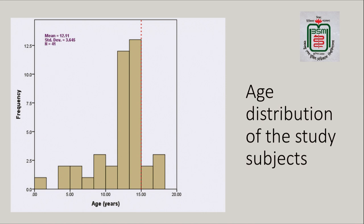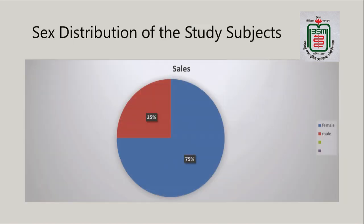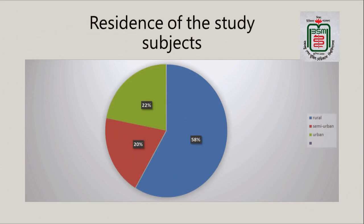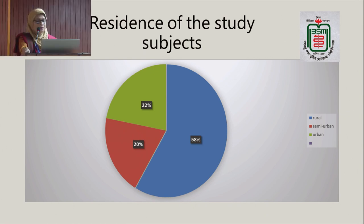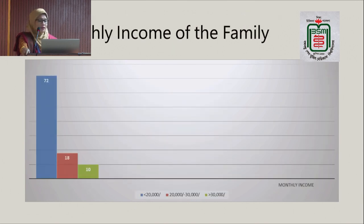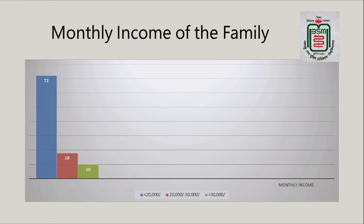Here is the age distribution — mean age was 12.11 years. Sex distribution is the same as in other countries of the globe — females are 75%. An important finding is the residence of the study subjects: 58% of patients are from rural areas, 20% from semi-urban, and 22% from urban areas. Regarding monthly income, 72% of parents had a monthly income of less than 20,000 taka.